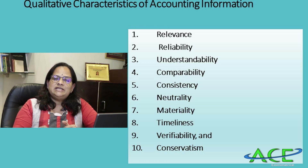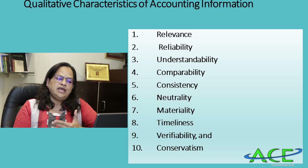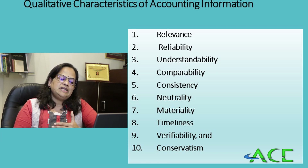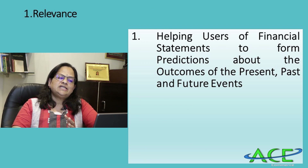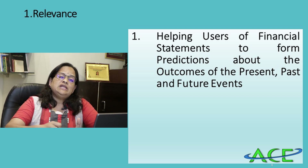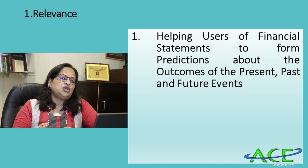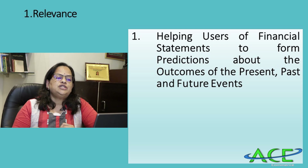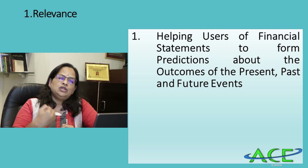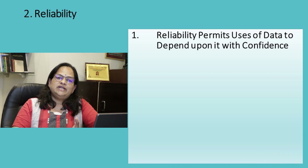Now we come to the last topic: qualitative characteristics of accounting information. There are ten: relevance, reliability, understandability, comparability, consistency, neutrality, materiality, timeliness, verifiability, and conservatism. The first is relevance — helping users of financial statements to form predictions about outcomes of past, present, and future events. Auditors may also provide relevant qualitative information in their notes, such as threats due to lockdown or natural calamity.